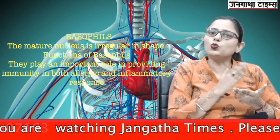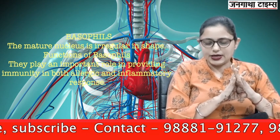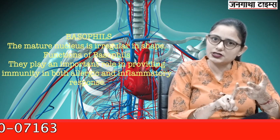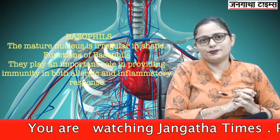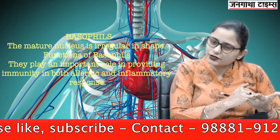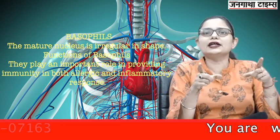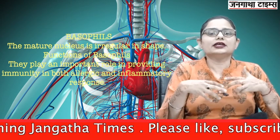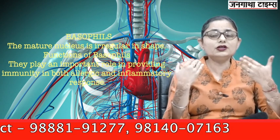Next are basophils, which form about 1% of total leukocytes. They have an irregularly shaped nucleus. Basophils release heparin, which is an anticoagulant; they release histamine, which produces inflammatory response; and they release certain other chemicals that produce allergic response. Basophils thus provide immunity in both allergic and inflammatory reactions. Histamine is a vasodilator — it increases the diameter and permeability of blood vessels so more leukocytes can leave the blood and enter the site of inflammation, enhancing the immune response.